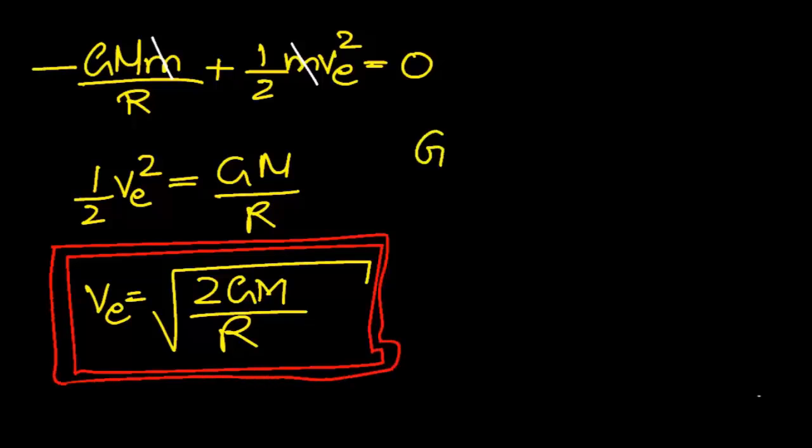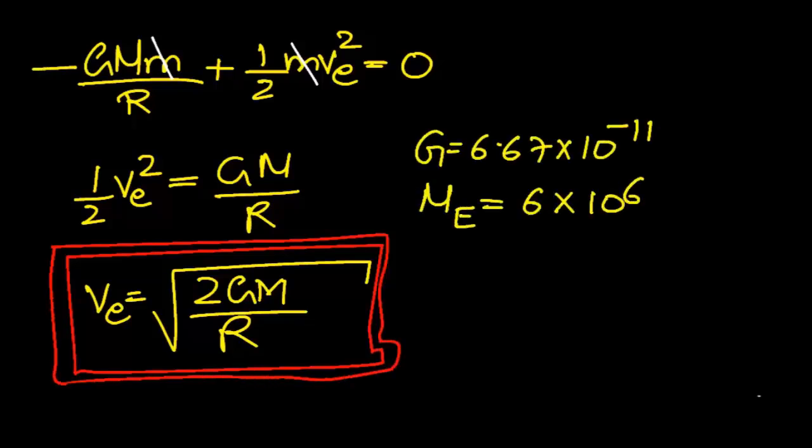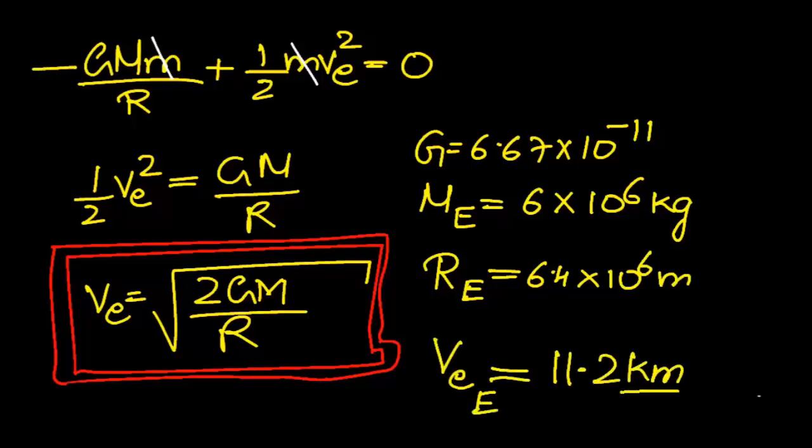Put in that equation the gravitational constant, the mass of the earth, the radius of the earth, and out pops the famous 11.2 kilometers per second. If you calculate the escape speed on the surface of moon, you get about 2.2 kilometers per second.